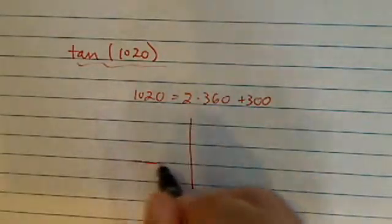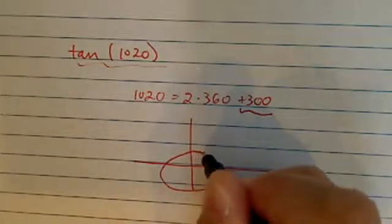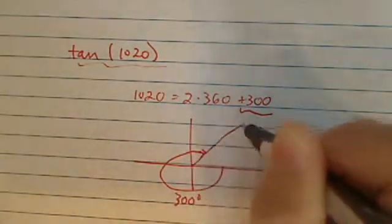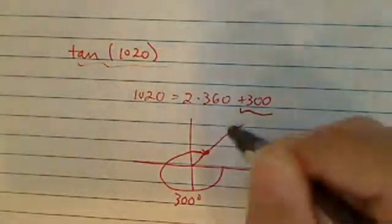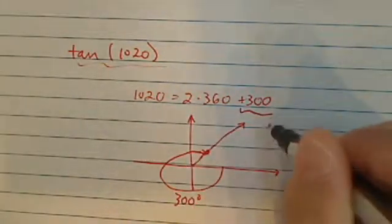So if you were to draw this angle, remember this is positive, so you're going to go counterclockwise. This is 300 degrees. And where the final terminating angle actually is - not in quadrant 4, but in quadrant 1.